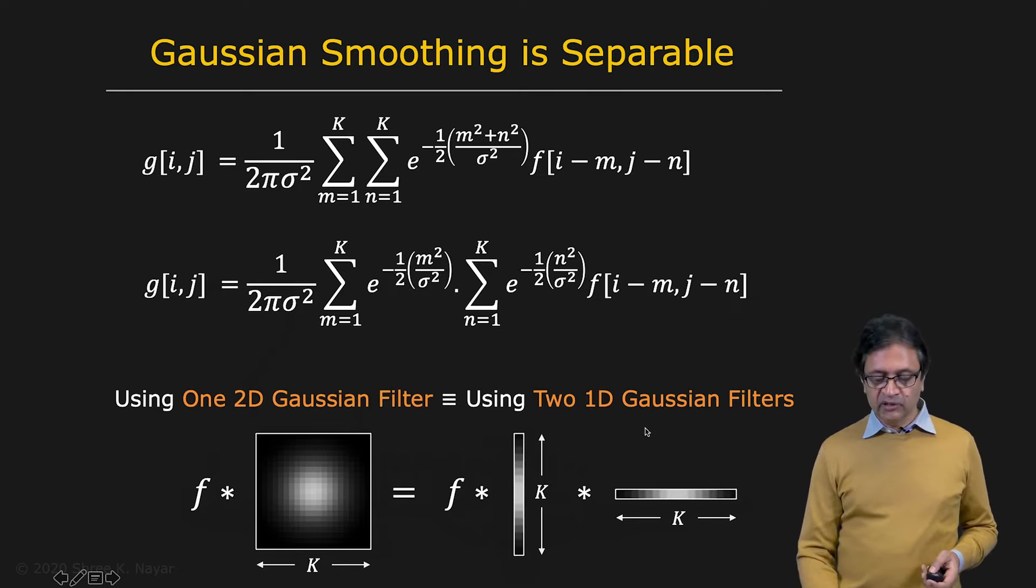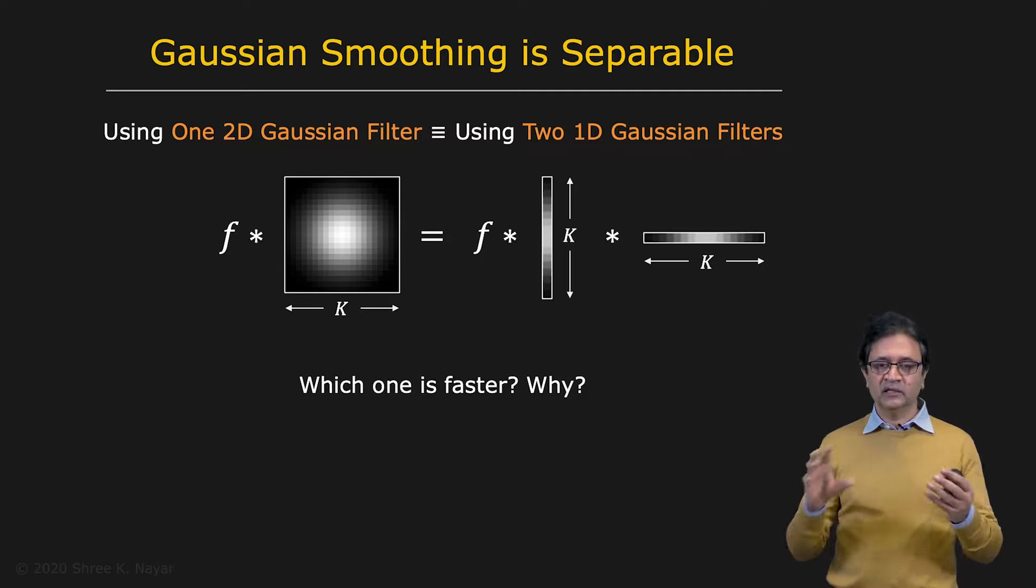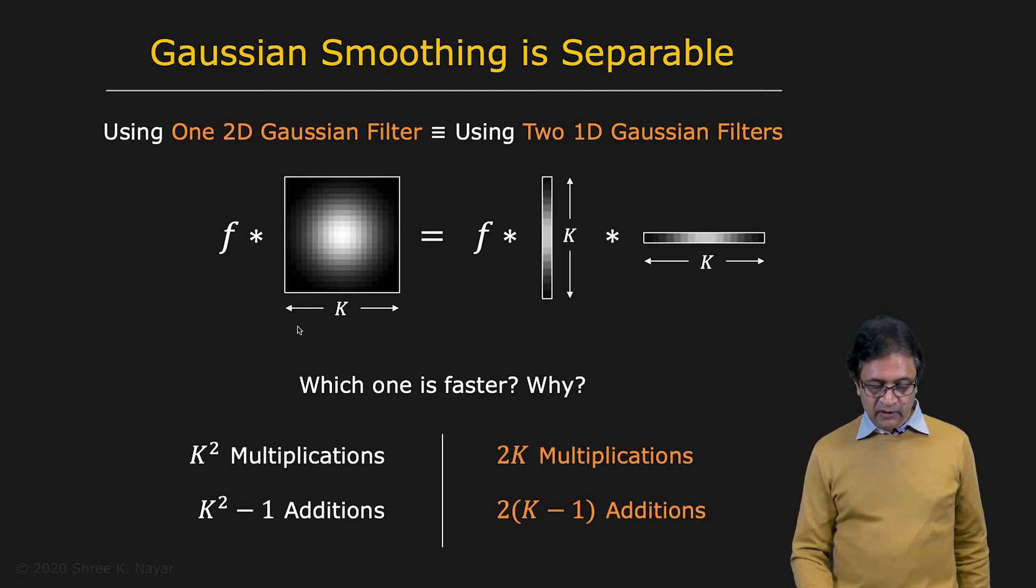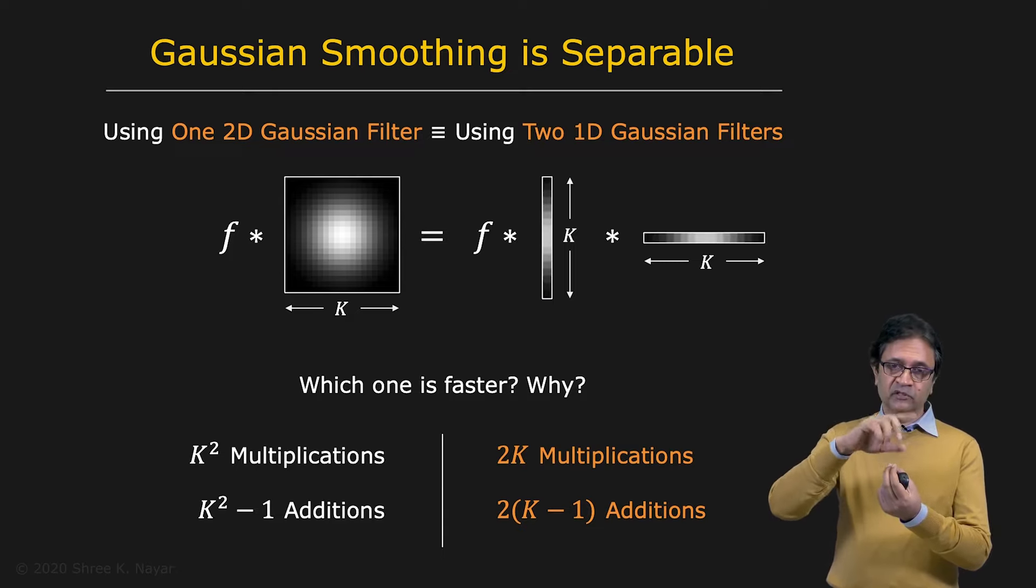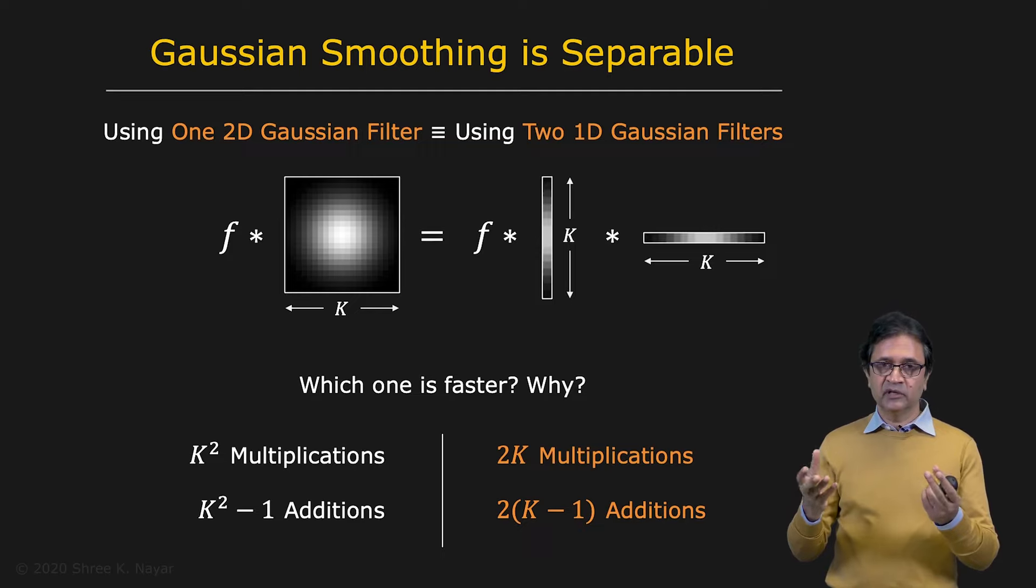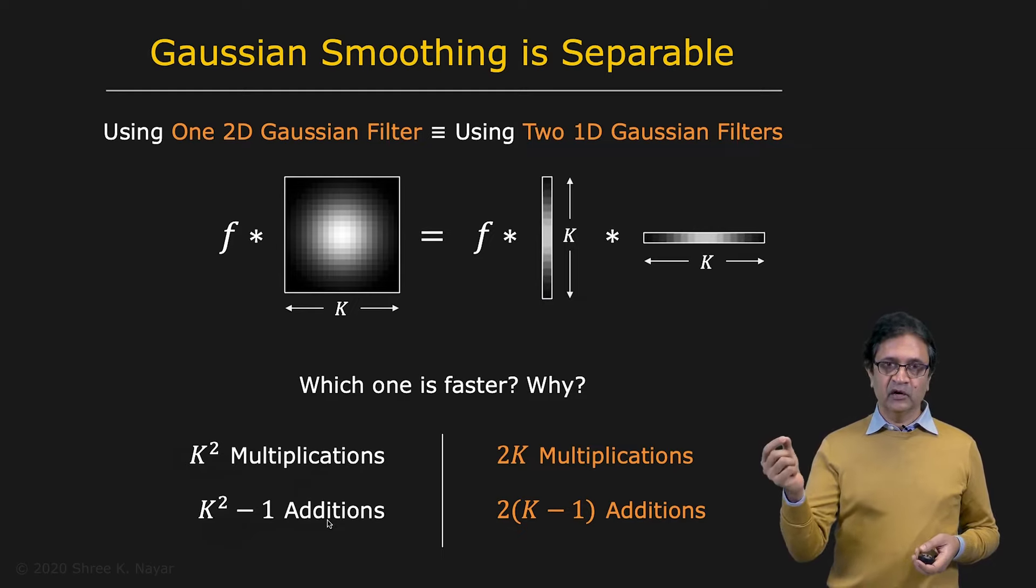So why is all of this important? Simply because it turns out that it's much cheaper to do this than to do this. So let's take a look at what the cost of doing a convolution is. Now, of course, the cost of doing a convolution will depend on the number of pixels you have in the image, because you're repeating this process at every pixel. But let's forget about that and just look at the cost of doing it at one pixel. And so now, if you take a look at this case right here, you see that it's a k by k mask. And you're placing it, you're centering it at a particular pixel. At that pixel, you're going to do k times k multiplications, pixel for pixel. And then k squared minus 1 additions to get the final result. So k squared multiplications, k squared minus 1 additions. And that's what you're going to end up getting as the output for that pixel.